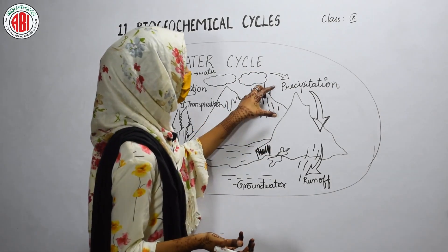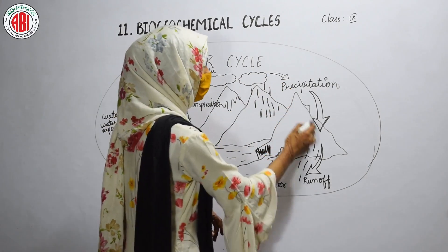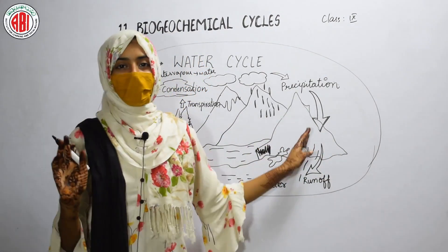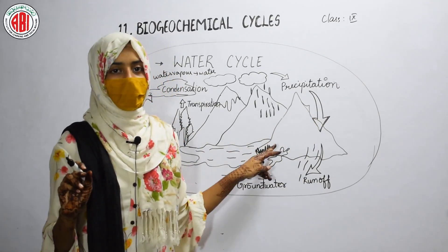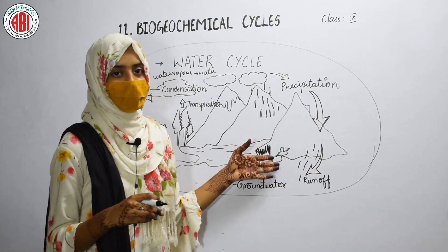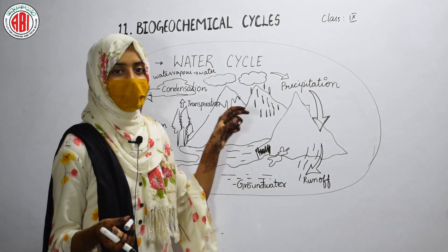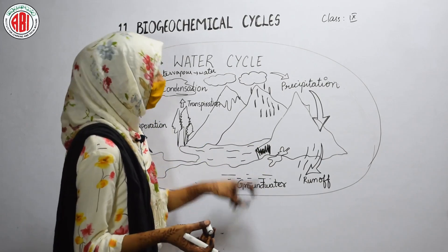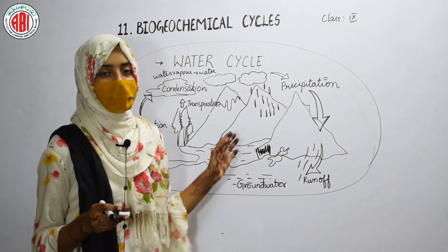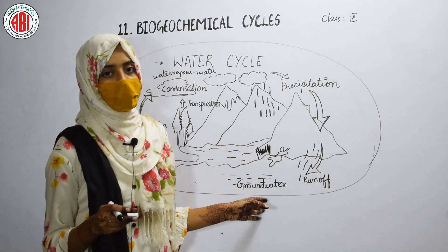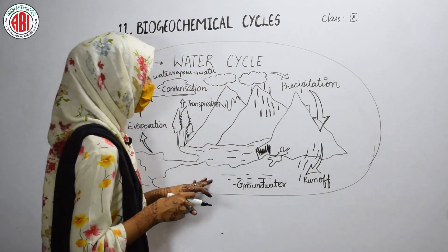After condensation, water falls down to earth in different forms, and this falling of rain or water in different forms is called precipitation. Rain water that falls from the mountains is called runoff. When this running water reaches the land, the maximum amount forms lakes, ponds, and streams. The remaining water seeps into the earth and forms ground water. Some amount of water is also absorbed by the soil. In this way, rain water percolates into the ground and forms ground water.